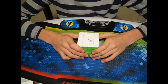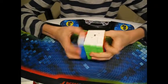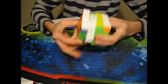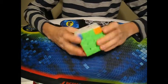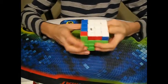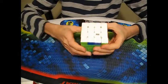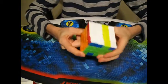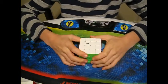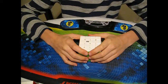Now 4x4. I have here the MoYu AoSu GTS2M, and my goal for 2020 on 4x4 is to be Sub-1 minute. I'm currently at 1 minute 10, and my PB is 56 seconds.